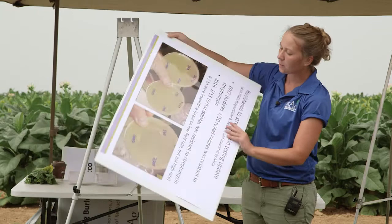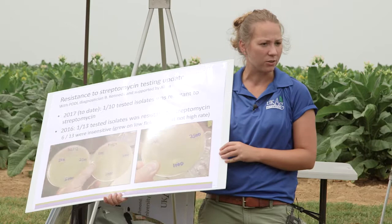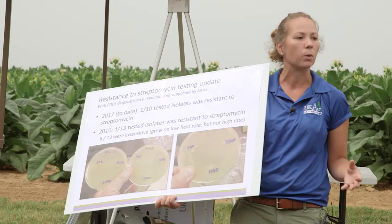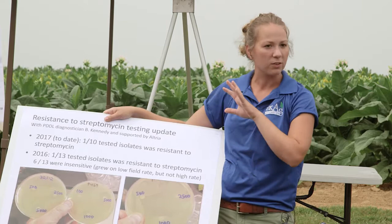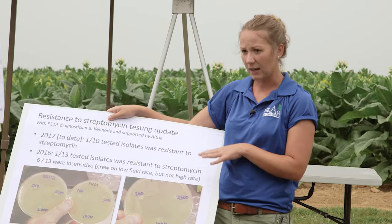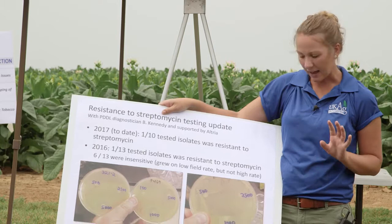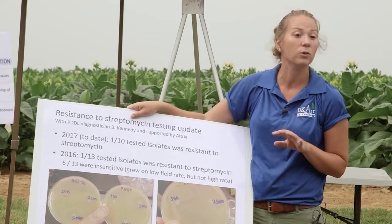Streptomycin is the major way we manage bacterial disease — it's an antibiotic. The question has come up from particular farmers: do I have resistance to streptomycin? It doesn't seem to be working when I apply it to my crop. In 2016 and 2017, we've been testing for resistance to streptomycin based on samples received in the disease lab at Princeton. Brenda Kennedy is doing the hands-on testing. In 2016, she tested 13 samples; one out of the 13 was found to be resistant. That single bacterial isolate grew on 25 times the field rate of streptomycin — so it was very resistant.